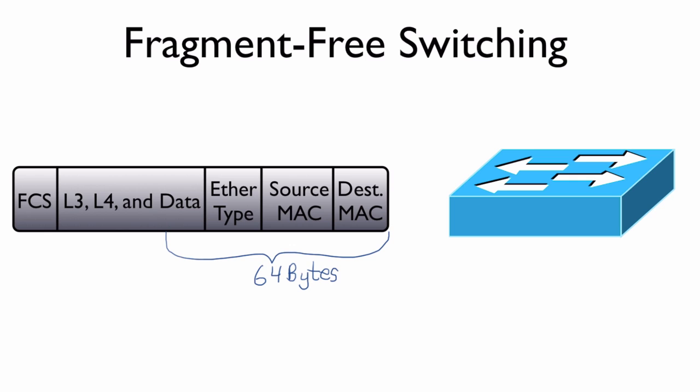To sum up, fragment-free switching is going to examine the first 64 bytes of a frame. If it does not see that a collision has occurred, it is then going to forward that frame based on the destination MAC address.